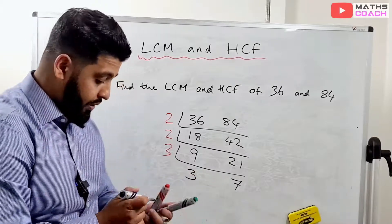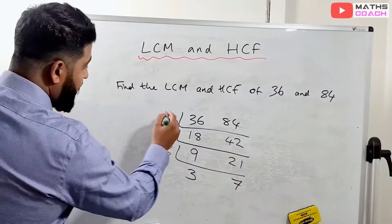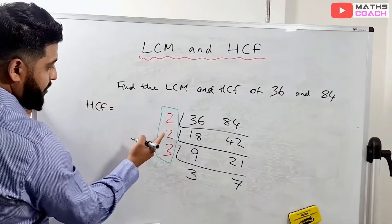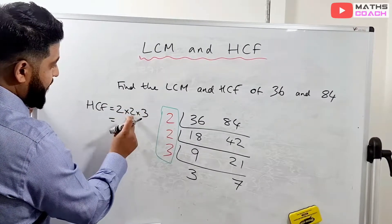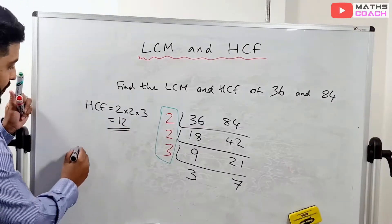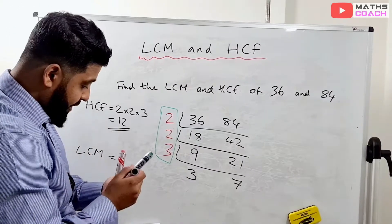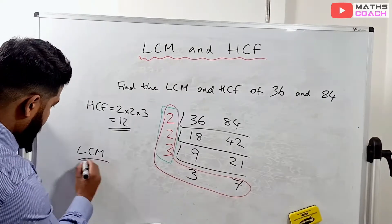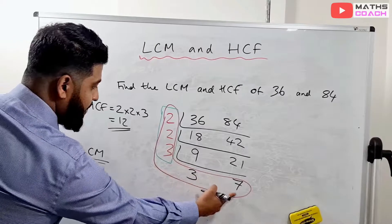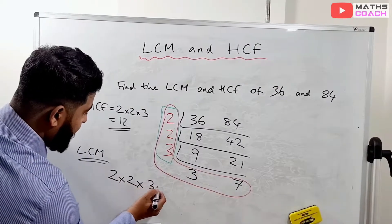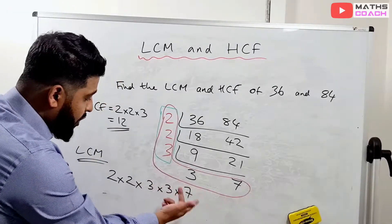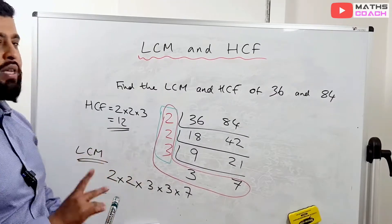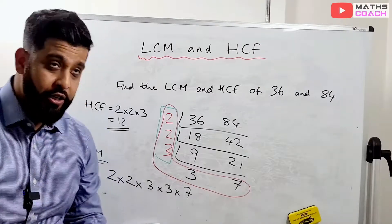Even if only one of them is a prime number, we stop. For the HCF, we multiply the numbers on the side: 2 × 2 × 3 = 12. So HCF is 12. For the LCM, we multiply all numbers in the L-shape: 2 × 2 × 3 × 3 × 7. Working through: 3 × 7 = 21, 21 × 3 = 63, 63 × 2 = 126, 126 × 2 = 252. So the LCM is 252.